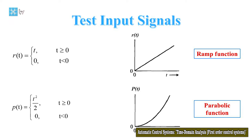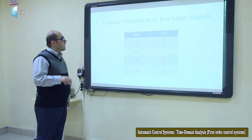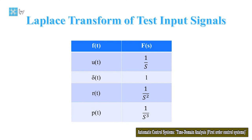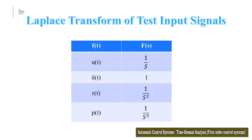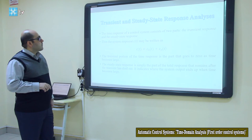In this table you can see the Laplace transforms of the input signals. The Laplace transform of the unit step function is equal to 1/s. The Laplace transform of the impulse function is equal to 1. The Laplace transform of the ramp function is equal to 1/s². And the Laplace transform of the parabolic function is equal to 1/s³.